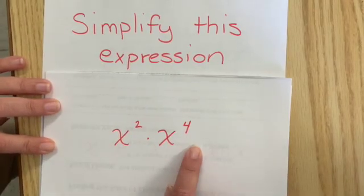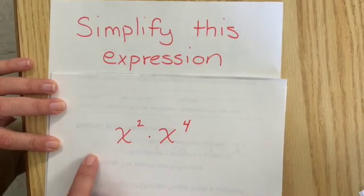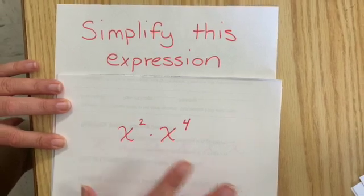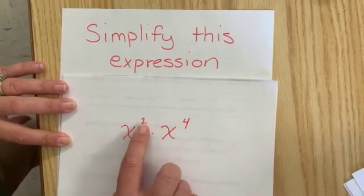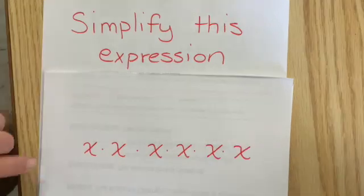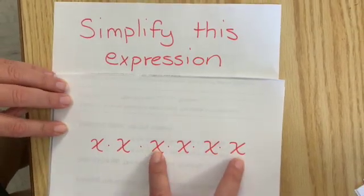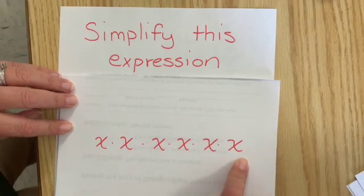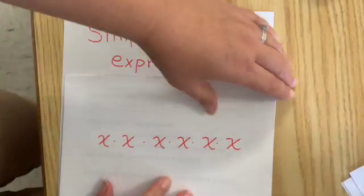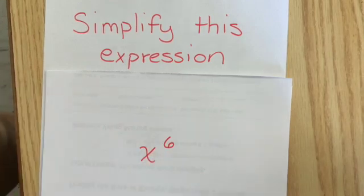Today we're going to be talking about exponents, and we're going to focus on when we are multiplying with exponents. But we're pretty much just going to expand these. So one of the examples would be x squared and x to the fourth, x squared and then x to the fourth, which gives us a total of how many x's. That would be x to the sixth power.